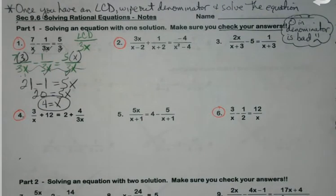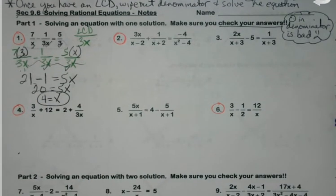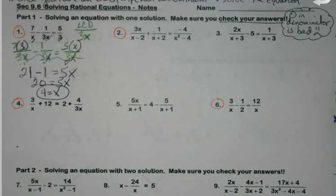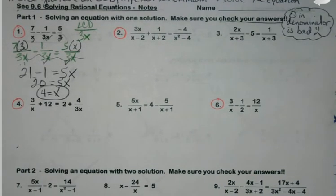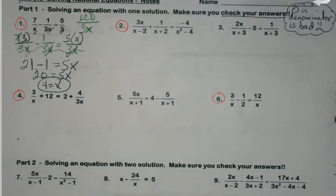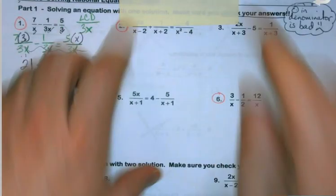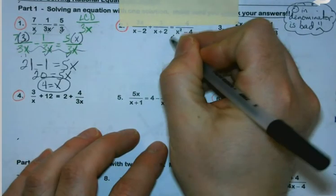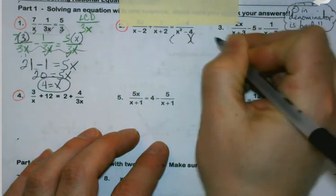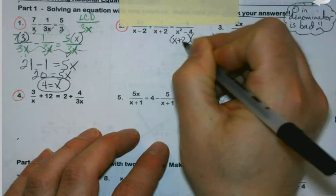When I look at 2, again, reminder, you're just looking at denominators at the start here. So when I'm doing that, can I factor any of them? No. Yes, the last one. So what's that going to look like factored? X plus 2, X minus 2.